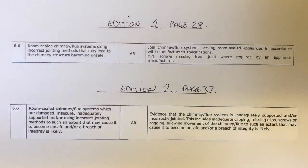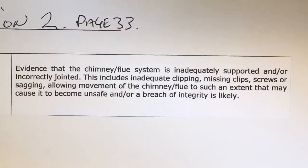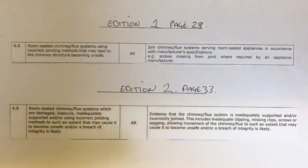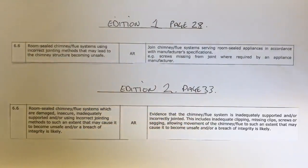Table reference 6.6 has been revised to provide guidance for room-sealed chimney flue systems which are damaged, insecure, inadequately supported, or using incorrect jointing methods to such an extent that it may cause them to become unsafe and/or breach of integrity is likely. It's basically a rewording with a few additional details to help when classifying flues — such as flues going through lofts without any support, which would be classified 'at risk', and if products of combustion are entering the loft it would be classified 'ID'.